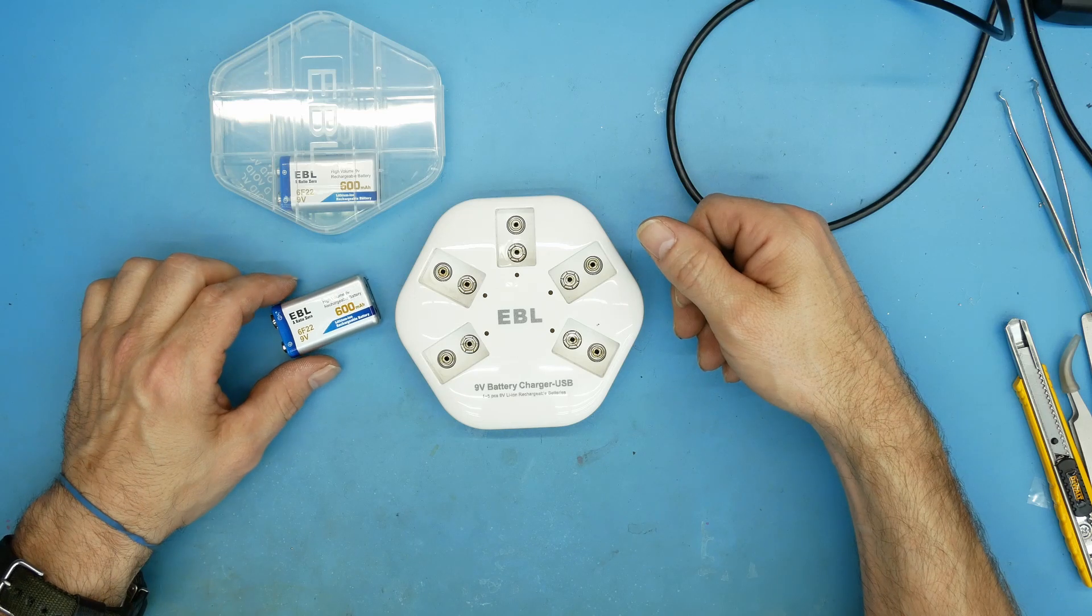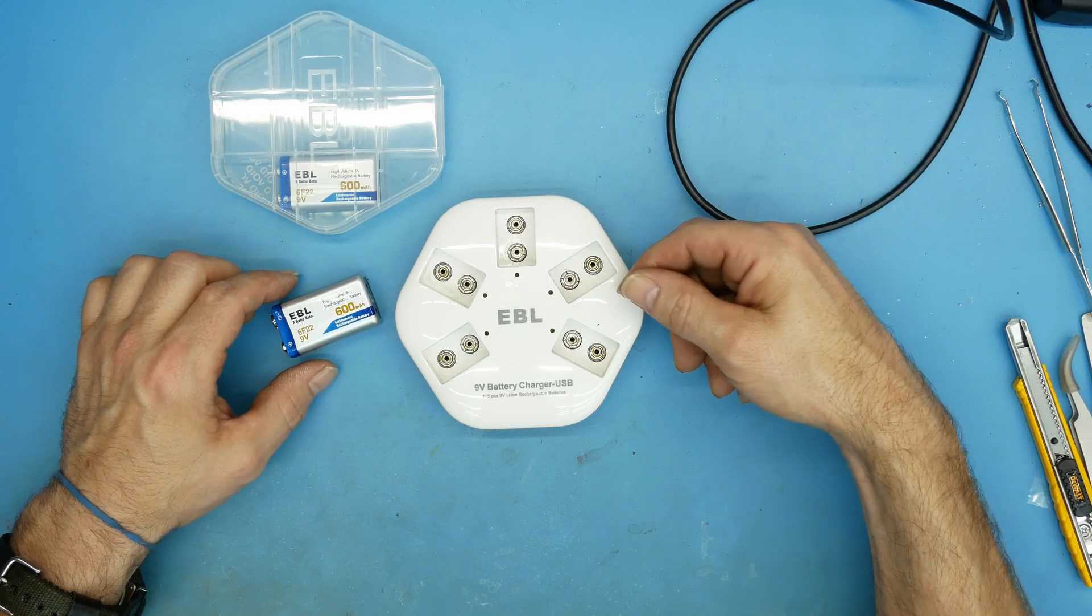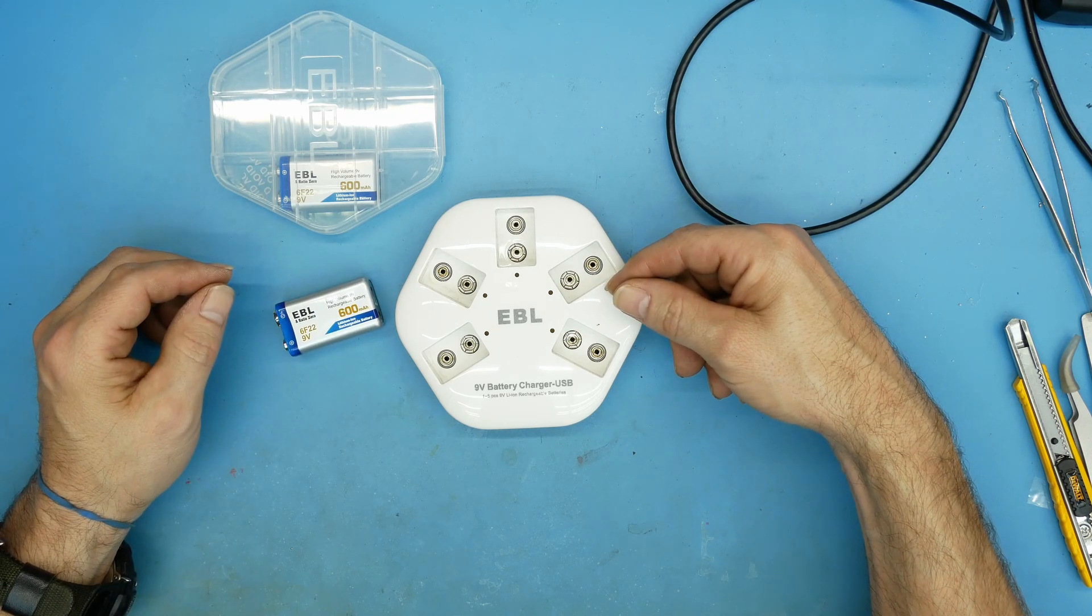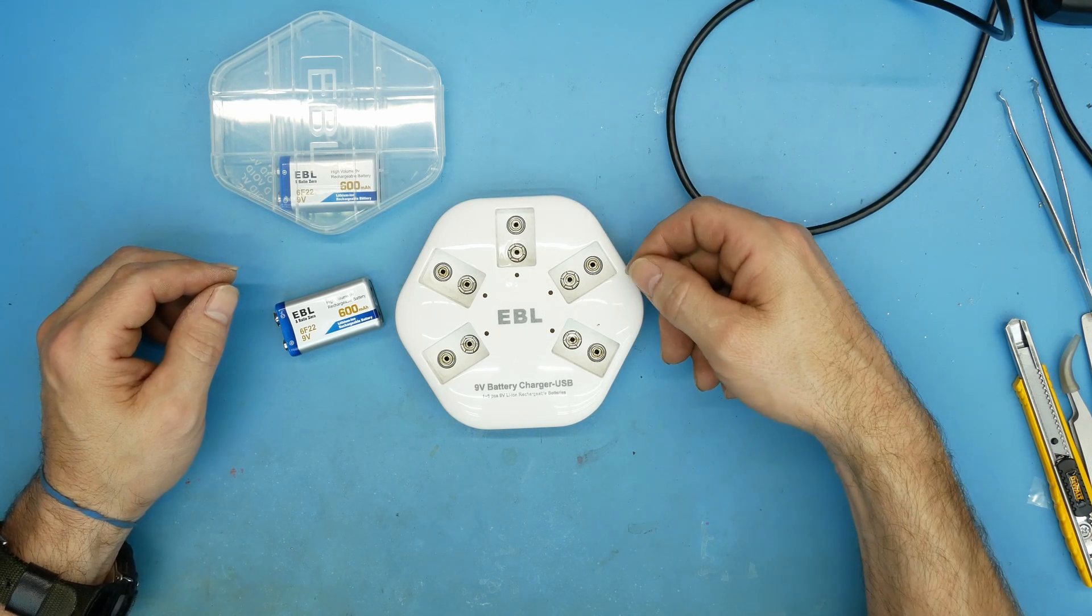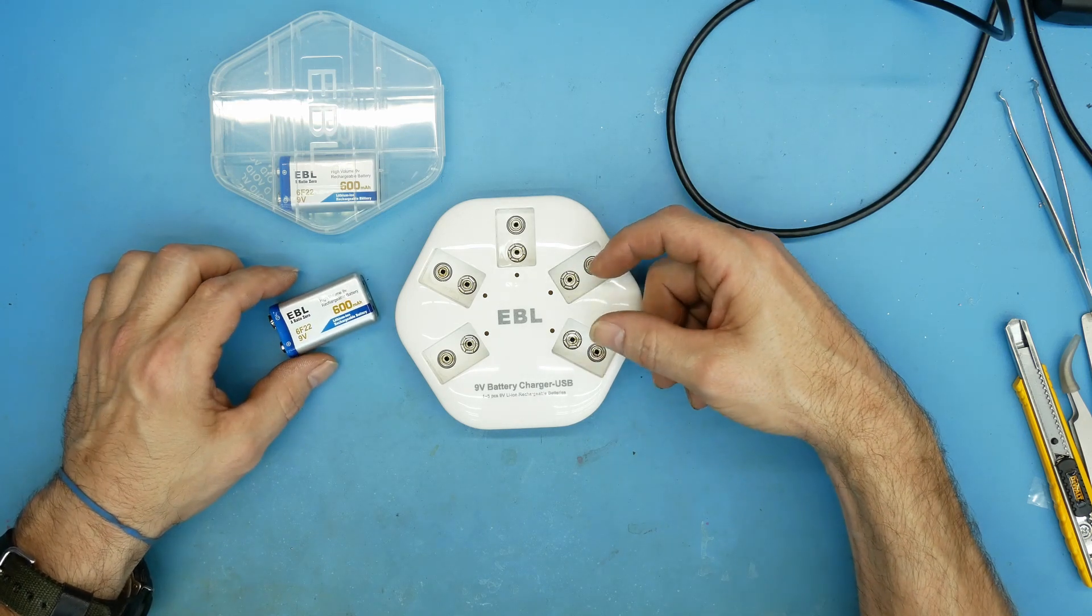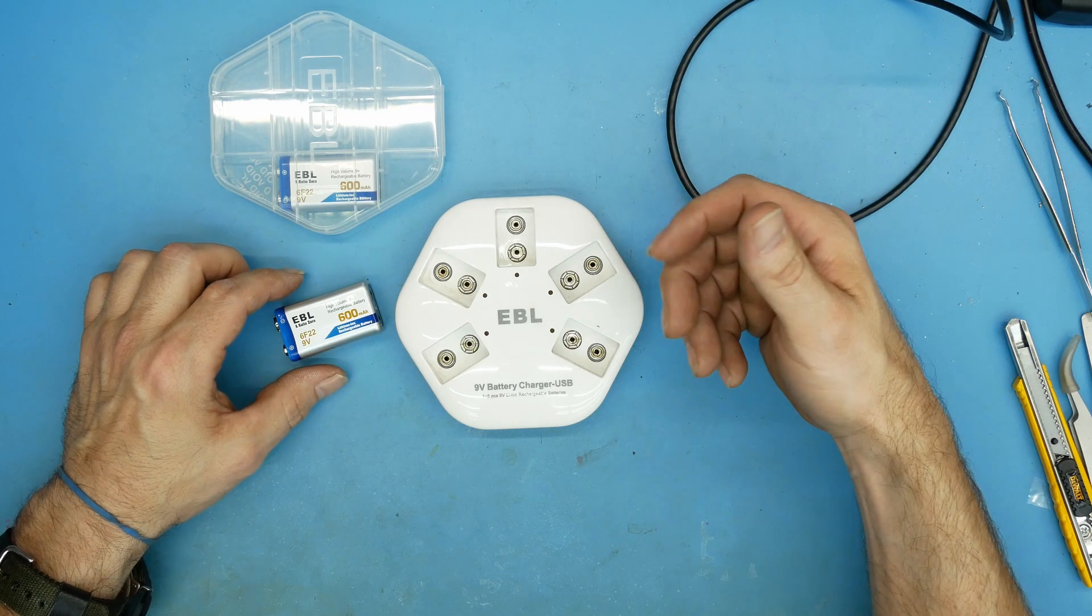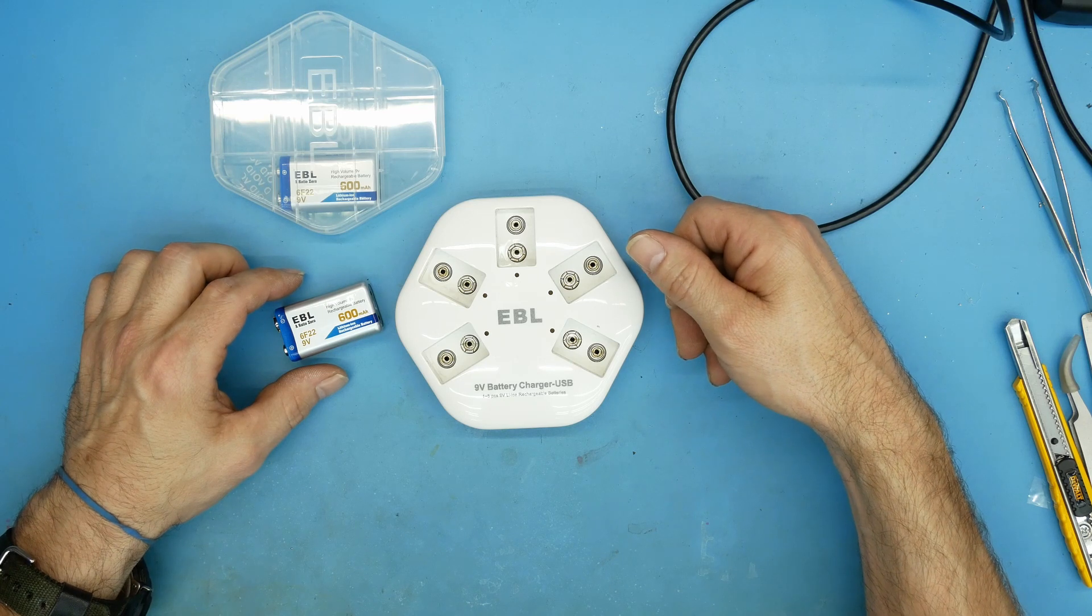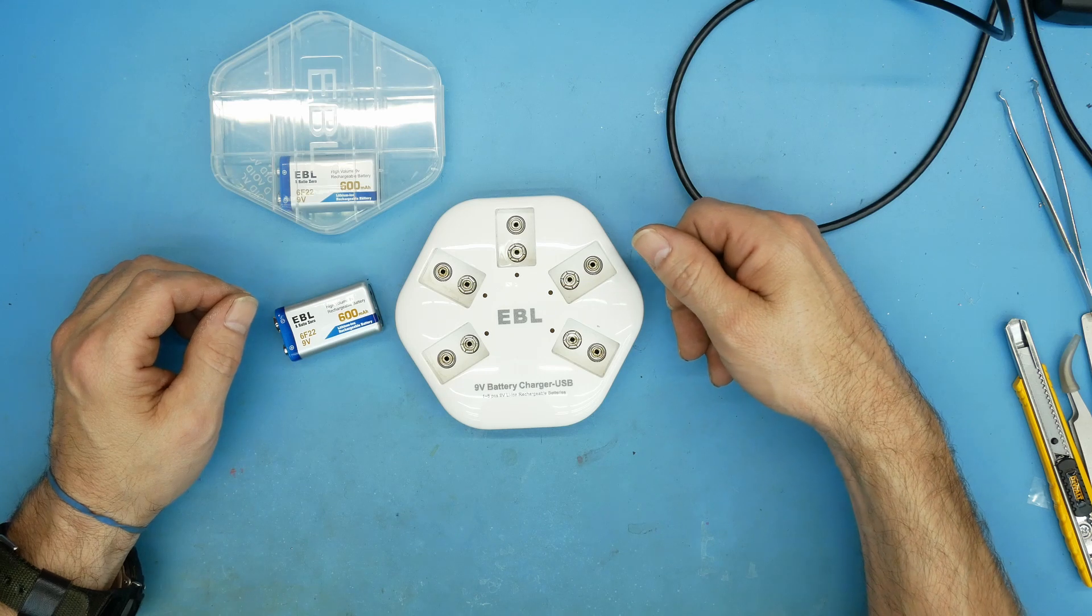EBL has a lithium-ion version with four batteries for 22 dollars and a charger, and another one for 28 dollars with five batteries with a two-cell charger. This is a five-cell charger, a little bit more expensive. Same thing with Maximum Power - 550 milliamps, 21 dollars for two cells plus a charger, or 37 dollars with four cells plus a charger.